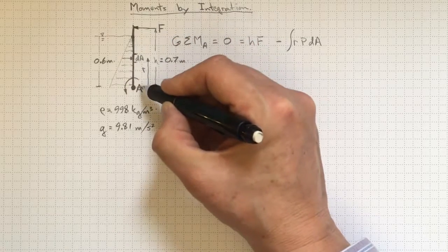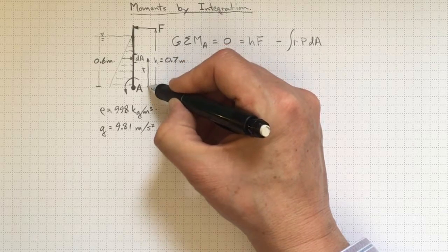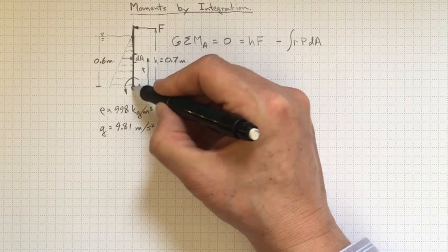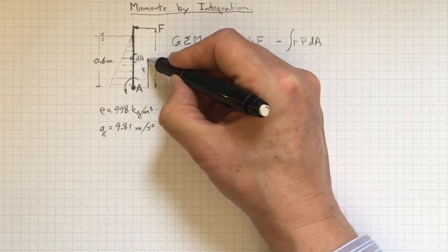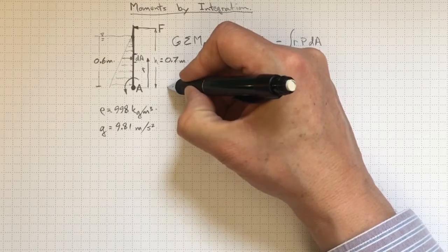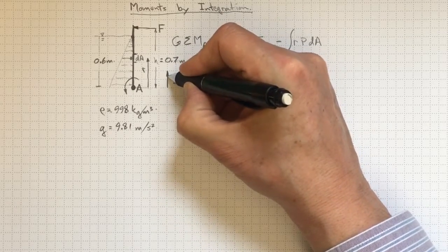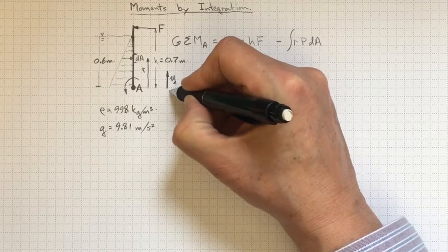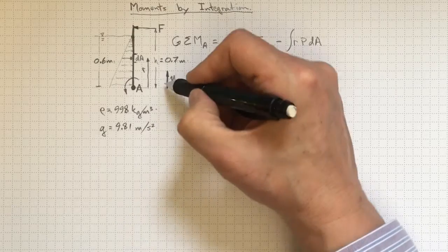Now, I need to define my coordinate system. It might be convenient if my coordinate system was the same as the distance away from the center, because that way R will be a really simple function of the coordinate system. So let's define Y as starting at the same height as the hinge and going up in a positive direction like that. I'm going to have to be careful then to figure out what my pressure is in terms of Y. So let's see,